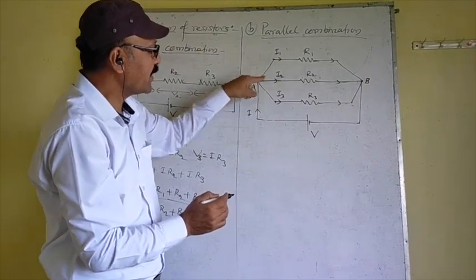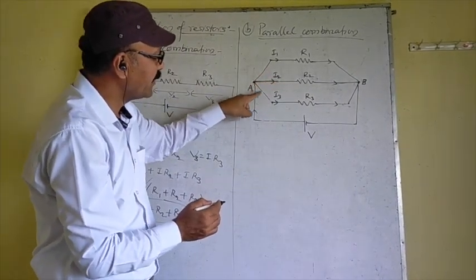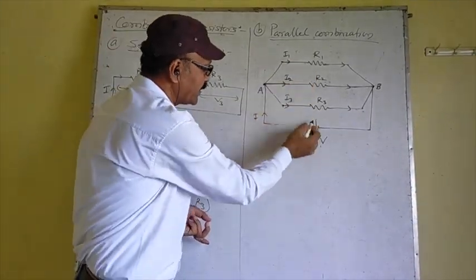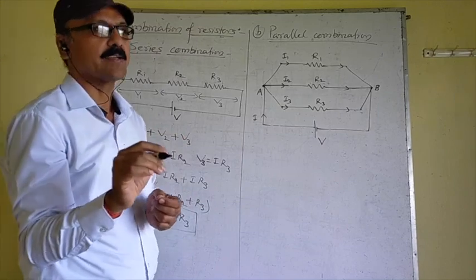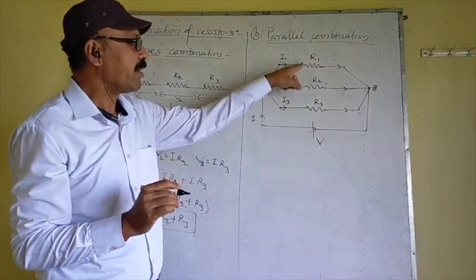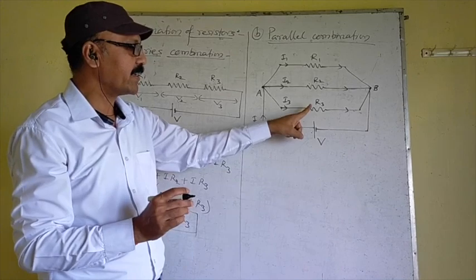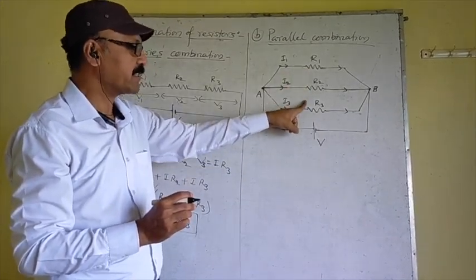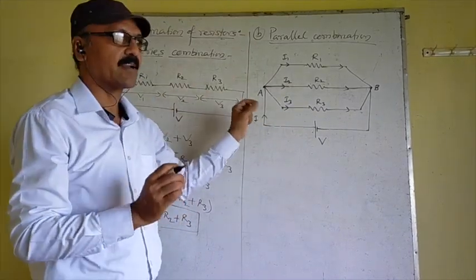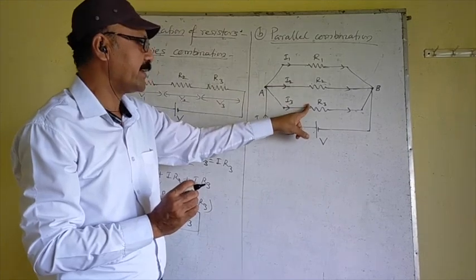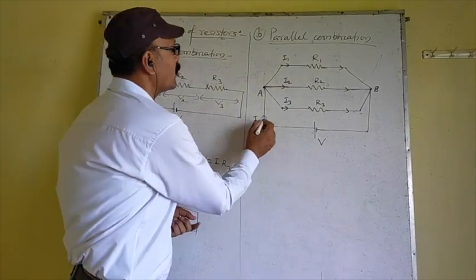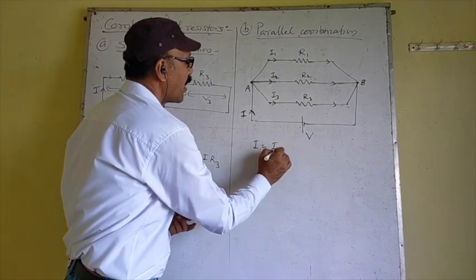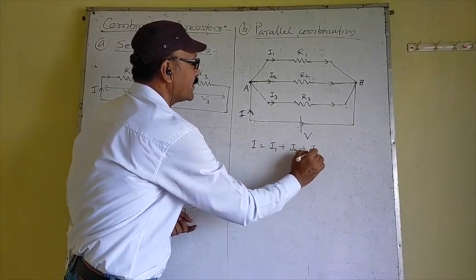In the first resistor, I1 current flows; in the second, I2; and in the third, I3. The potential is the same across all three resistors in the Parallel Combination. Remember: potential is the same in the Parallel Combination, whereas current is the same in the Series Combination. Current is different in the Parallel Combination. So total current I = I1 + I2 + I3.